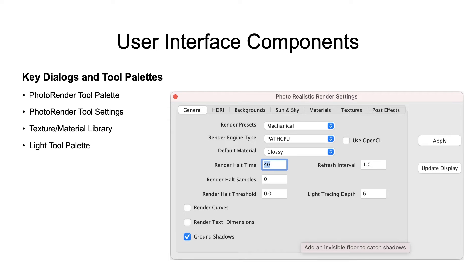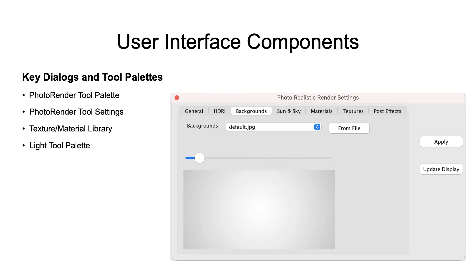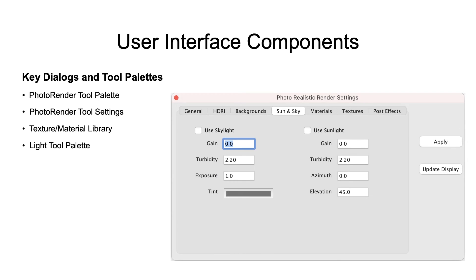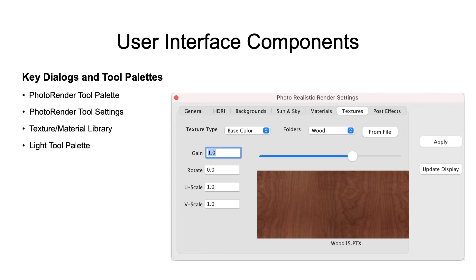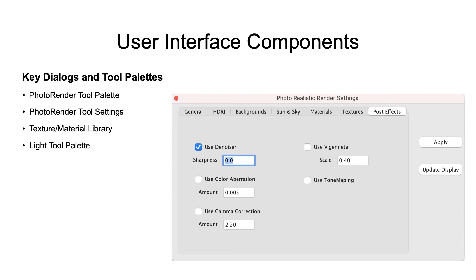The second key user interface item is the render settings dialog, accessed from the last tool icon in the render tool palette. The photorealistic render settings dialog sets all the parameters associated with general settings, HDRI, backgrounds, sun and sky lighting environments, materials, textures, and post-processing effects.